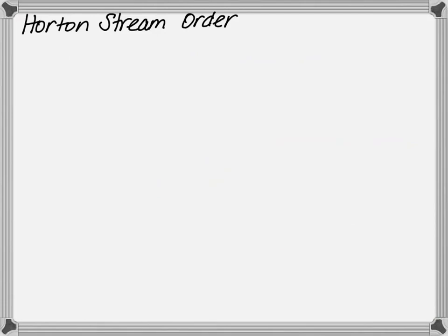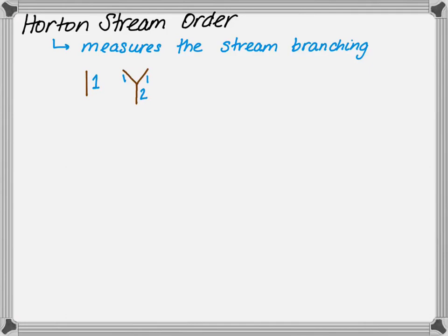Next, we're going to talk about stream order, Horton stream order to be particular. It measures stream branching. The way it works is a first order stream is a single stream. A second order stream occurs when you have two first order streams combined, as shown. A second order stream still occurs if a second order stream meets a first order stream. A third order stream only occurs if a second order stream meets another second order stream.